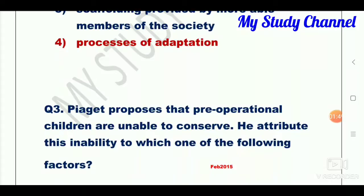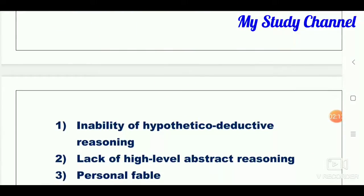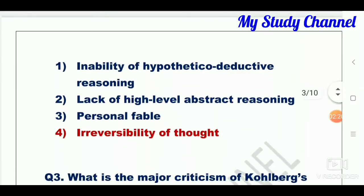Question number three: Piaget proposes that pre-operational children are unable to conserve. He attributes this inability to which one of the following factors? Option one is inability of hypothetico-deductive reasoning; second is lack of high-level abstract reasoning; third is personal favor; fourth is irreversibility of thought. Option four is the right answer — that is, irreversibility of thought.